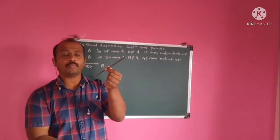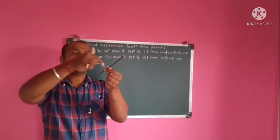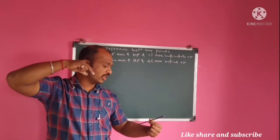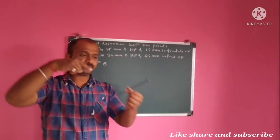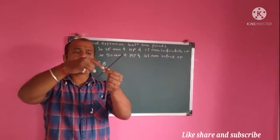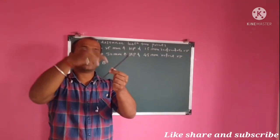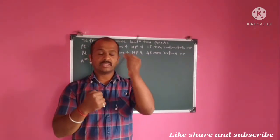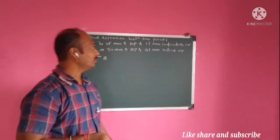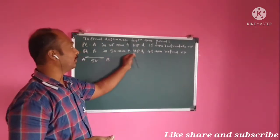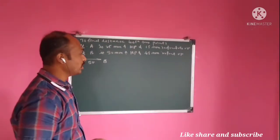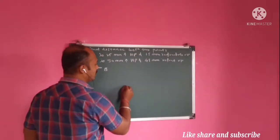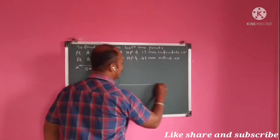In that case you have to use the auxiliary view. From the auxiliary view direction you will get the true length of this line, which gives you the distance between these two points. Let's see how to solve this kind of problem.